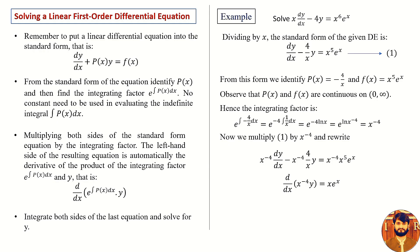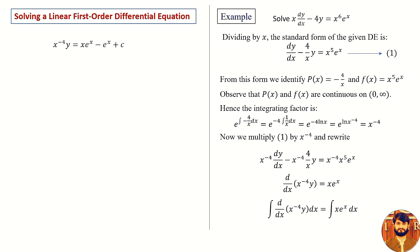Now we integrate both sides of the equation. So we have: integral of d over dx of x to the power minus 4 times y dx equals integral of x e raised to the power x dx. The right side requires integration by parts, and we get: x to the power minus 4 times y equals x e raised to the power x minus e raised to the power x plus C.